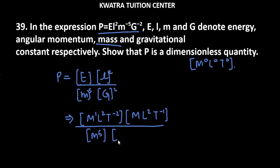Then you have G, the gravitational constant. The gravitational constant is M⁻¹L³T⁻² raised to power 2, because G is squared. And L, the angular momentum, is also squared.